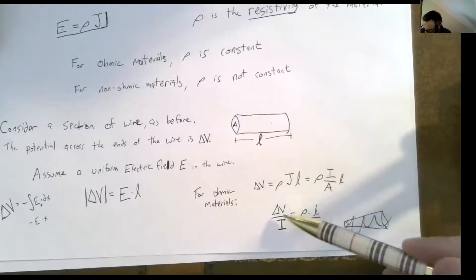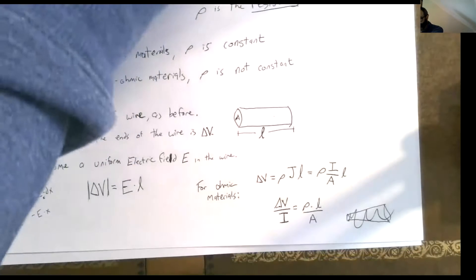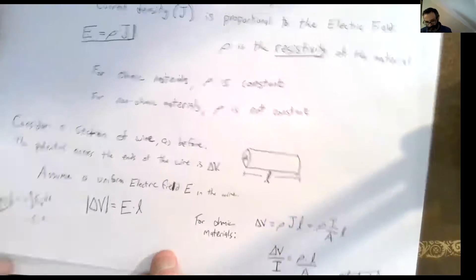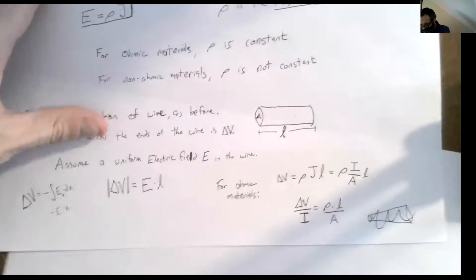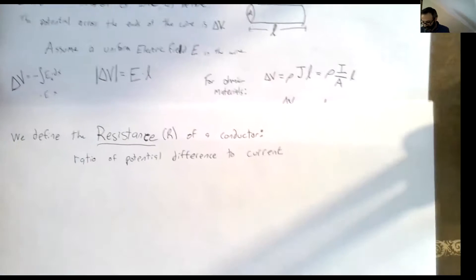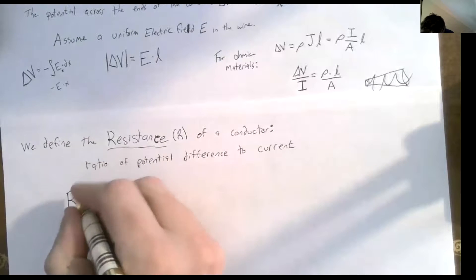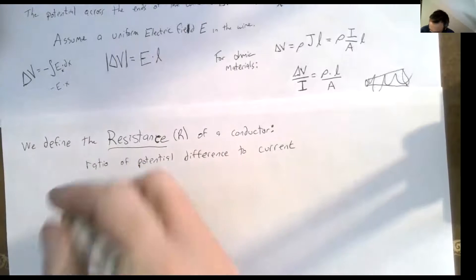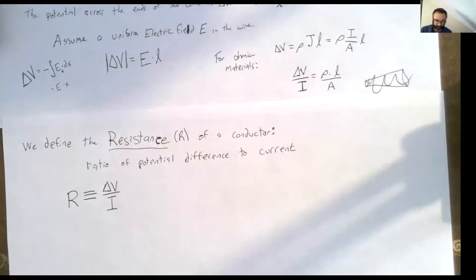We're going to define a new quantity — this ratio of potential difference over current. That's going to be called the resistance. We define the resistance of a conductor as the ratio of the potential difference to the current. This is a very important equation we're going to see all the time: resistance is defined as delta V over I, and that's true for any material, ohmic or not.